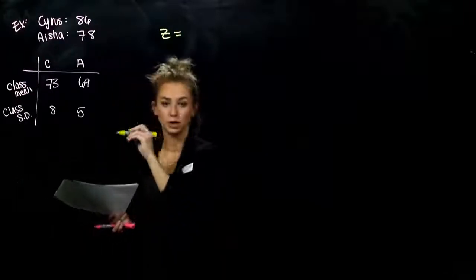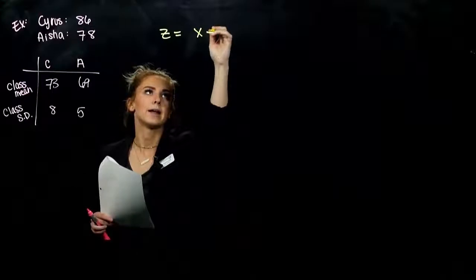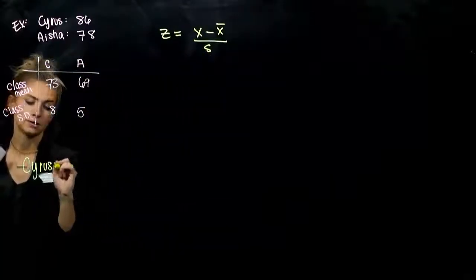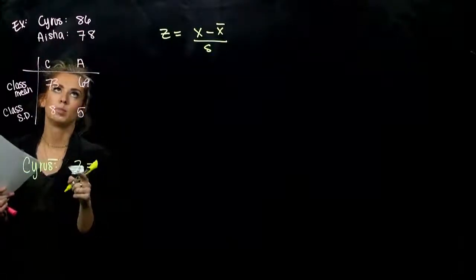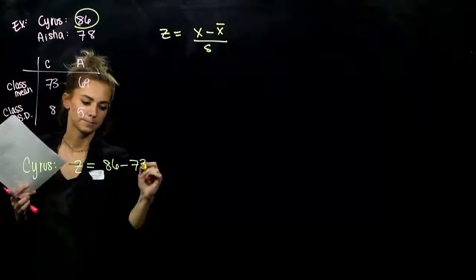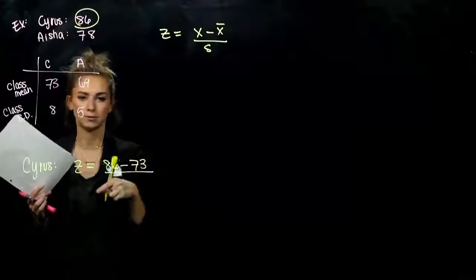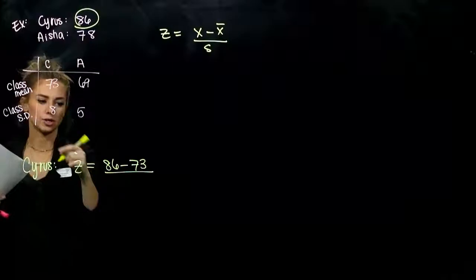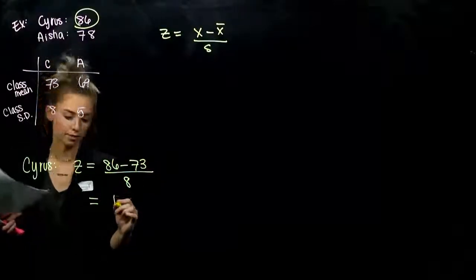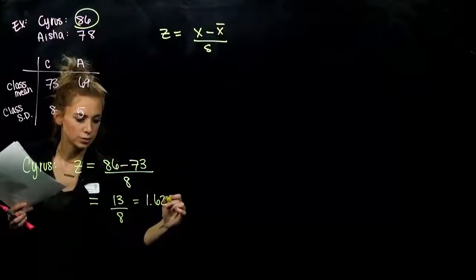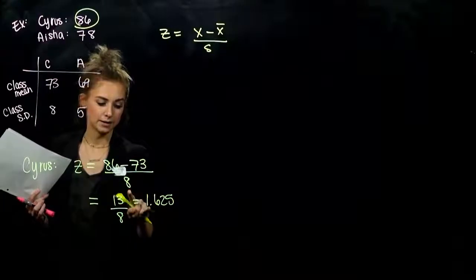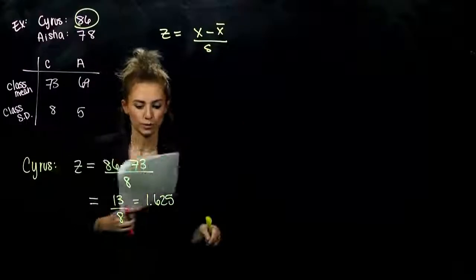How do we calculate the Z-scores? We find the difference between the data item and the average, and divide by the standard deviation. For Cyrus: his score was 86, the class average was 73, so he deviated positively from the mean. The class standard deviation was 8. So 86 minus 73 equals 13, divided by 8, which gives 1.625 standard deviations from the mean.